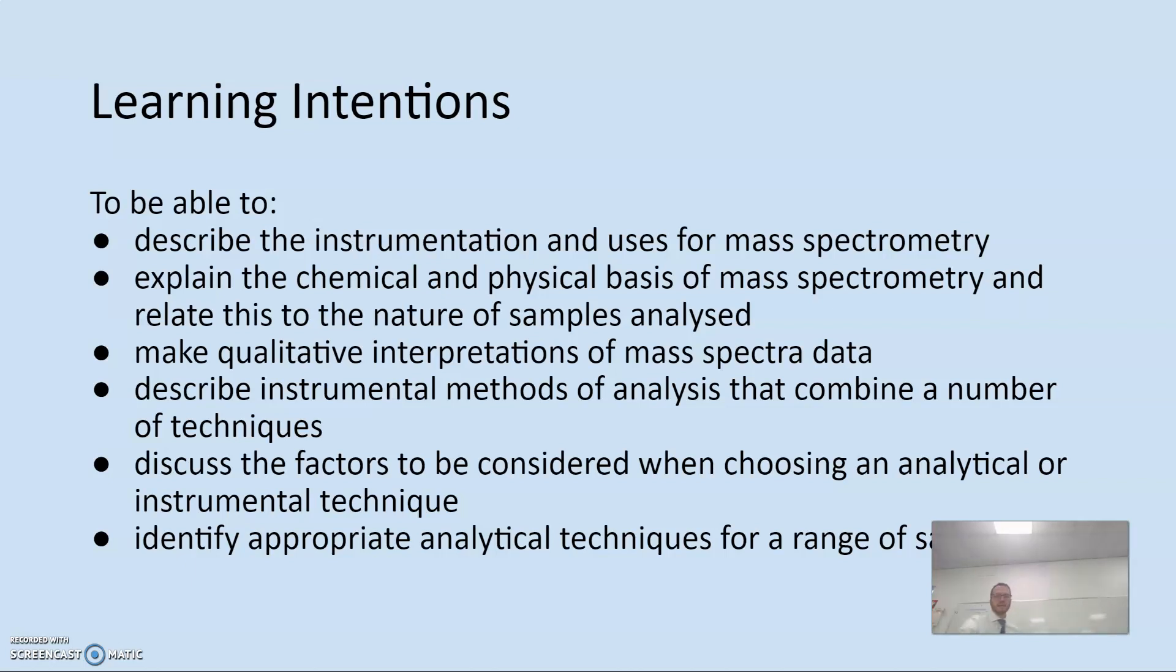Explain the chemical and physical basis of mass spectrometry and relate this to the nature of samples analyzed. Make qualitative interpretations. So all of this is qualitative. Much of unit four is qualitative. Obviously, our atom economy, percentage yield that we looked at, that's the only quantitative component. And volumetric analysis obviously is quantitative. Spectroscopy, qualitative.